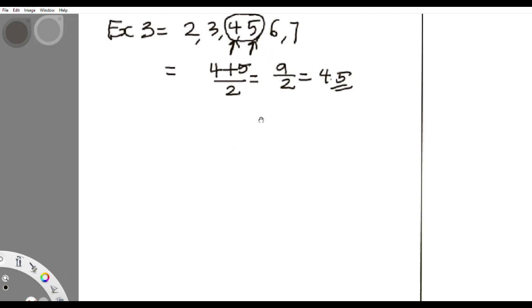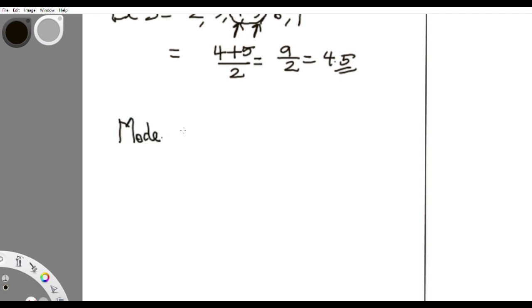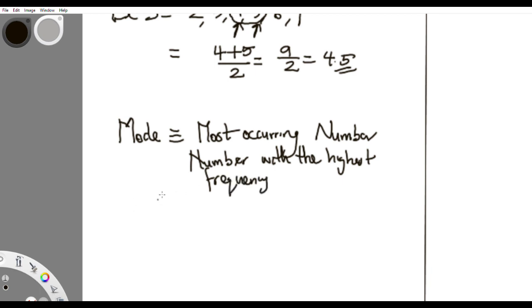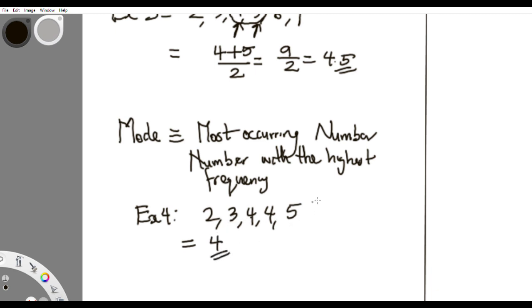The last measure for ungrouped data is the mode. The mode is simply the most occurring number — the number with the highest frequency. For example, in a distribution where four appears more than the rest, the mode is four. It's as simple as that.